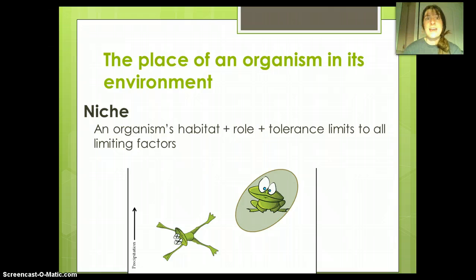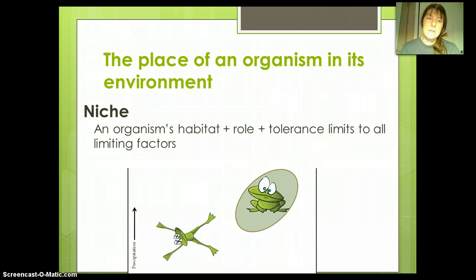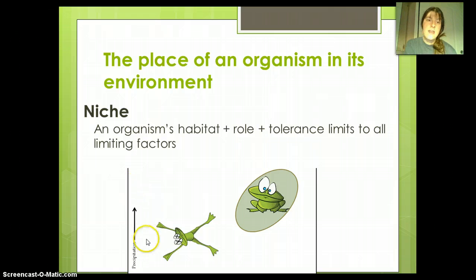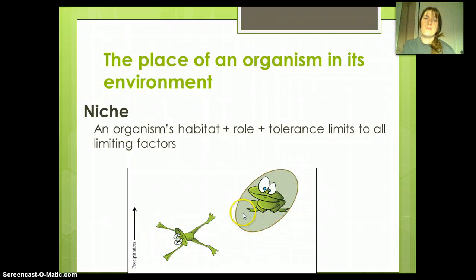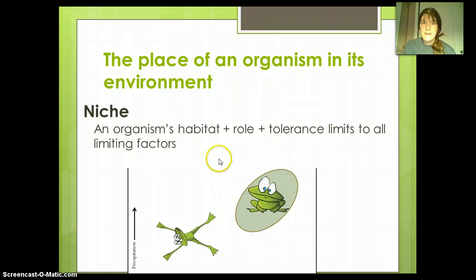Every single organism has a specific role in the ecosystem and that role is its niche. For example, if we're looking at temperature and precipitation, there's going to be a certain area where it's too dry and too cold for frogs and they will die. There'll be another area where there's just the right amount of precipitation and temperature to support them.